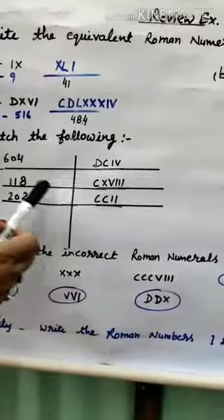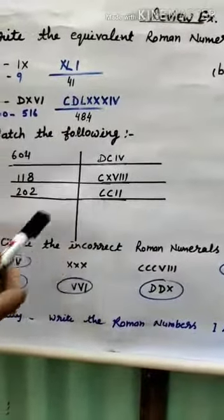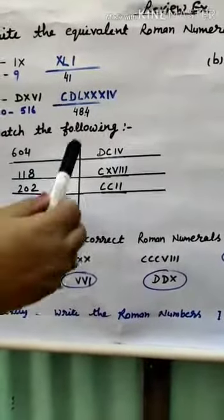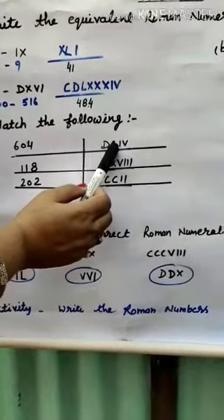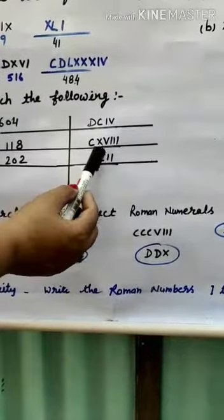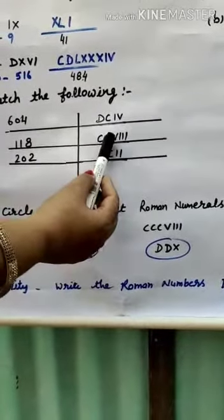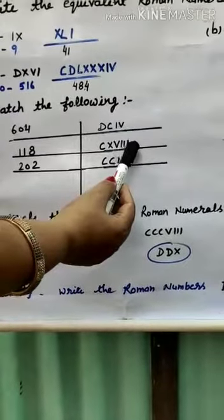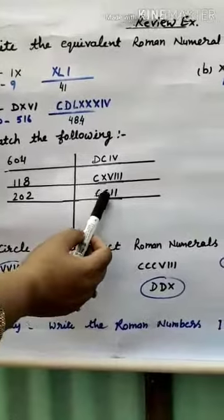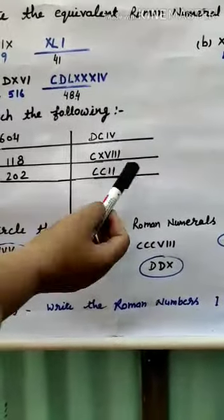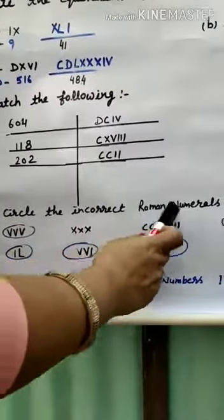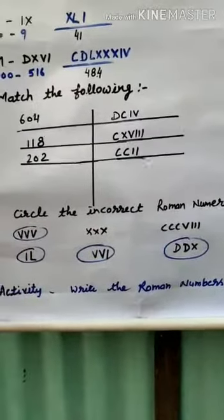Match the Following: Write the right answer beside each Roman numeral — do not draw arrows. For 604: D is 500, C is 100, making 600, plus IV is 4, giving 604. For 118: X with VIII makes 18, so CXVIII is 118. For 202: CC is 200, plus II is 2, giving CCII.